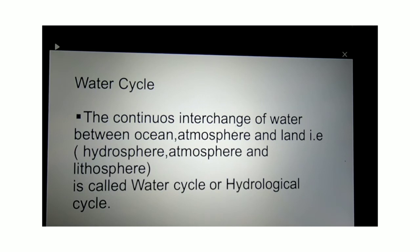Due to heat, the water of the oceans gets evaporated and converted into gas. When it rises up in the atmosphere and cools down, it forms clouds. These clouds again fall back on the earth's surface in the form of rain or snow. This process keeps on continuing without any interruption and is known as the water cycle or hydrological cycle.